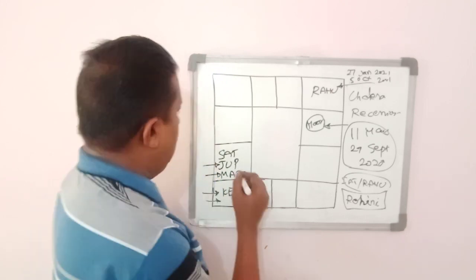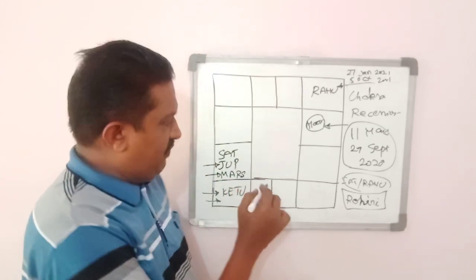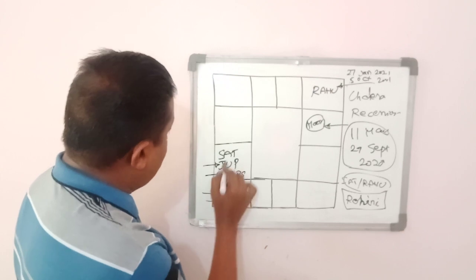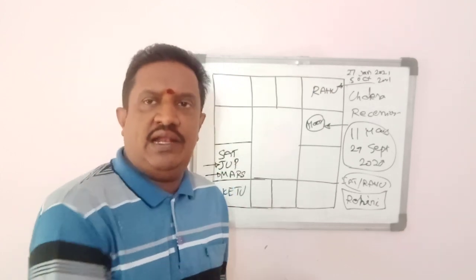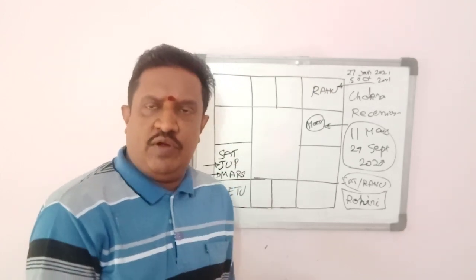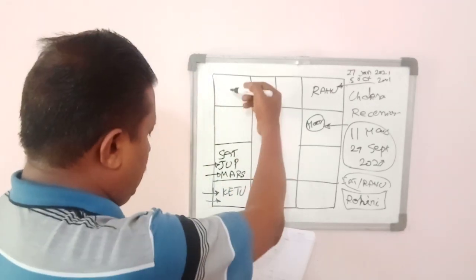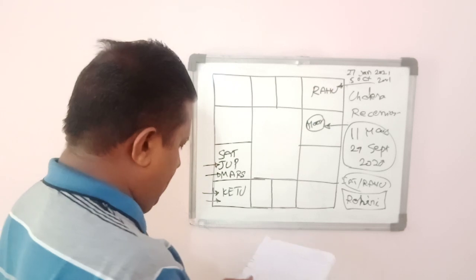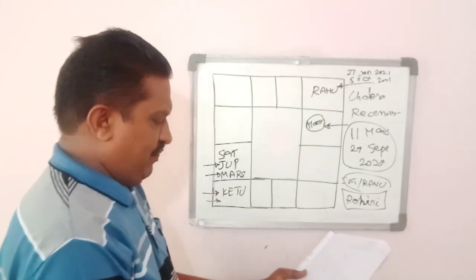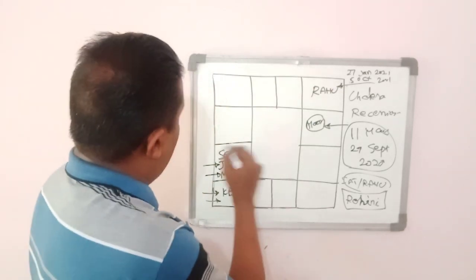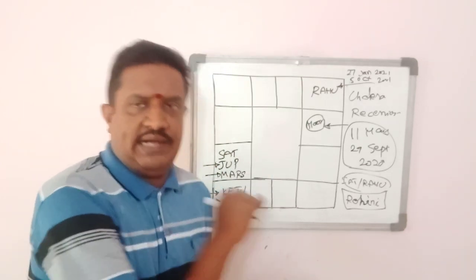We need to remember that after 20th November 2020, Jupiter is moving back again to Capricorn and will stay there for one year. Within that year, he moves to Aquarius and comes back for a few months, but most of the time he will be spending in Capricorn along with Saturn.